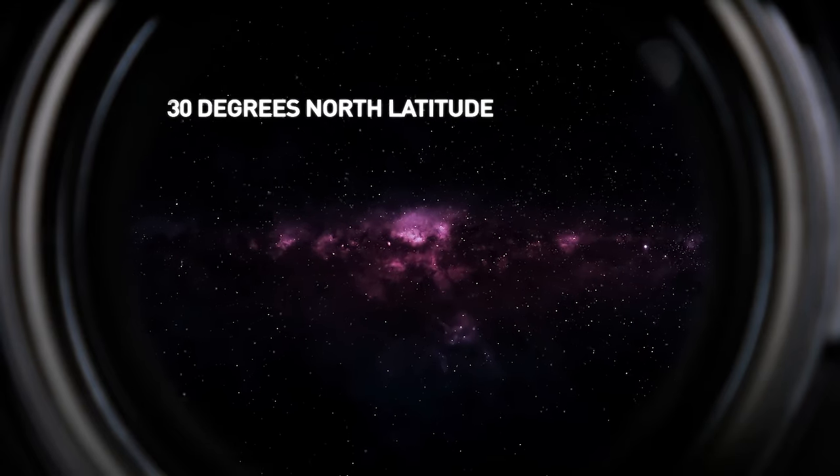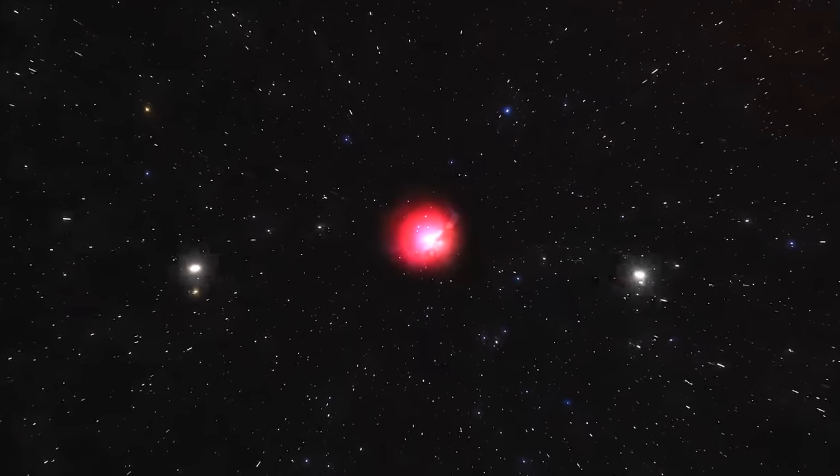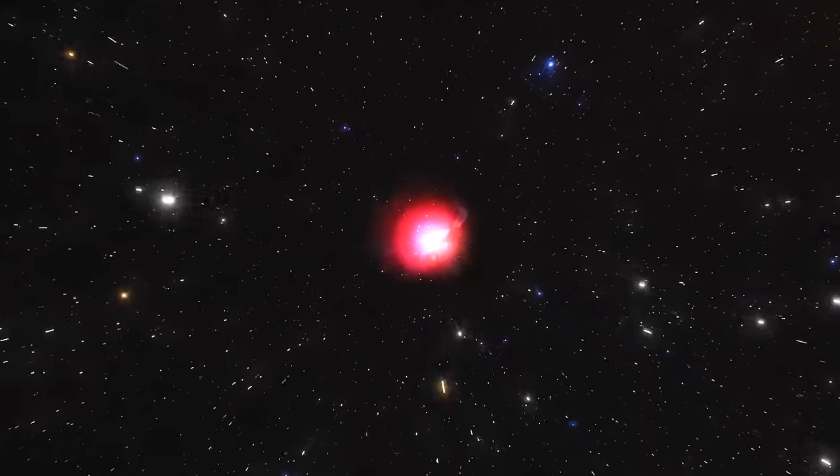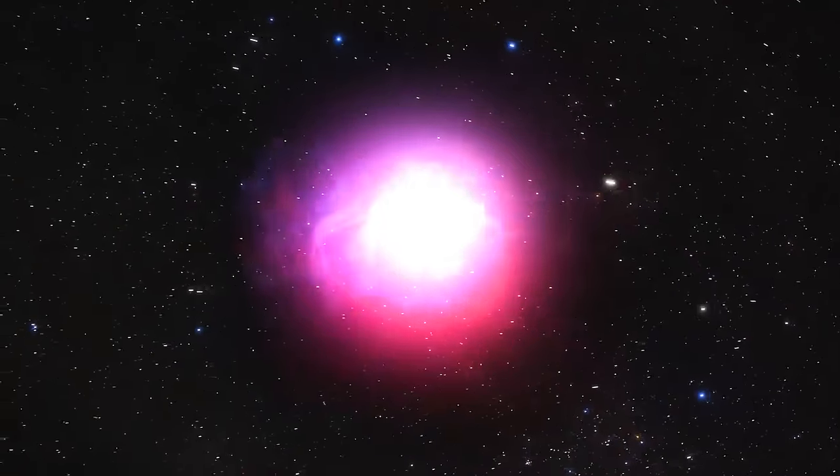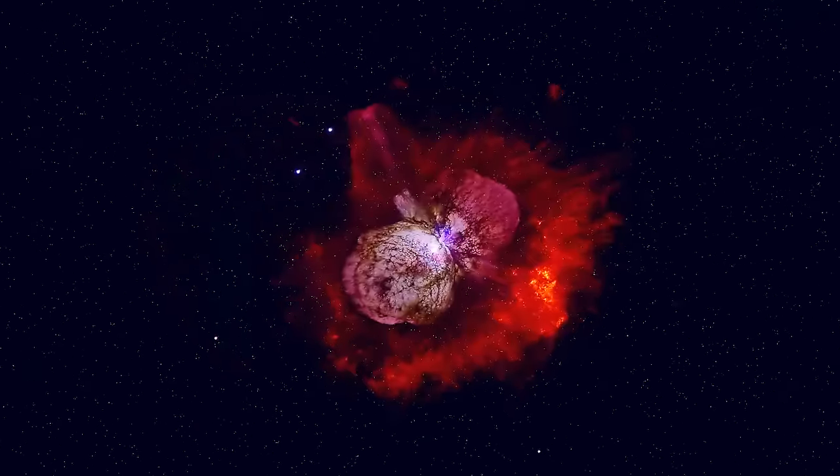Eta Carina releases 5 million times more energy than the Sun. Truly one of the whoppers of the Milky Way, Eta Carina is 100 times more massive and 240 times larger than our yellow-white dwarf Sun, Sol.